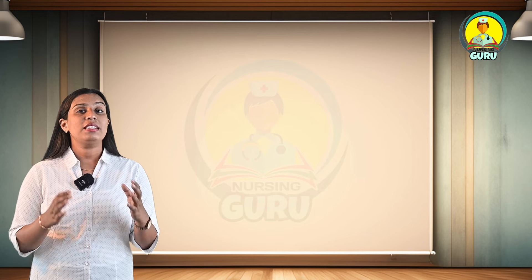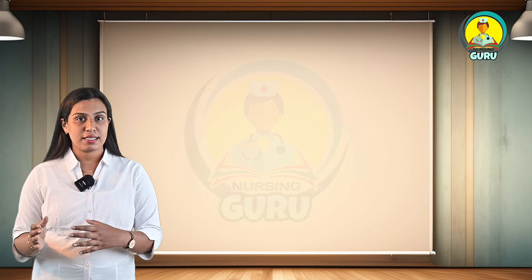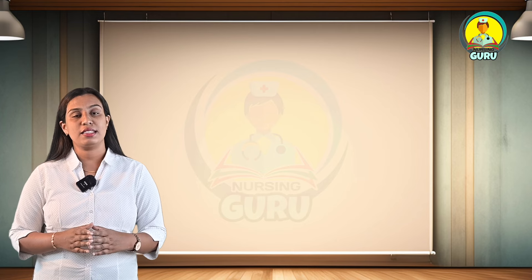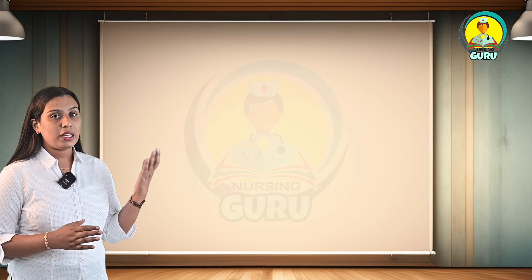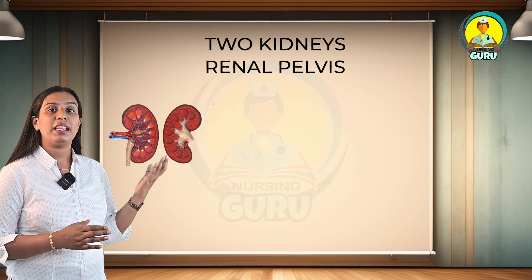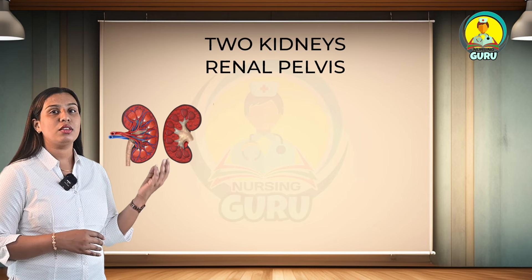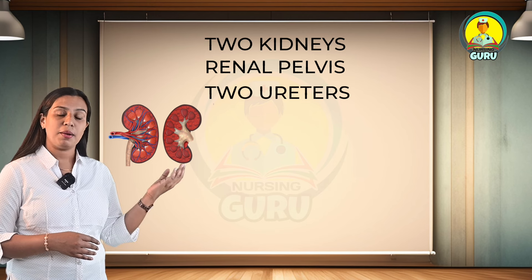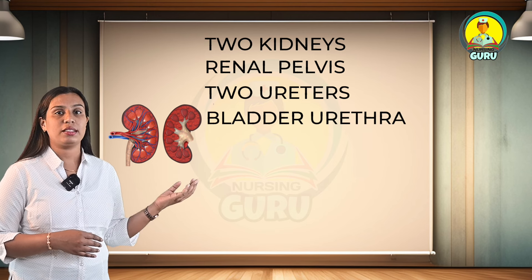The renal or excretory system includes the following organs: 2 kidneys, renal pelvis, 2 ureters, bladder, and urethra.